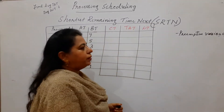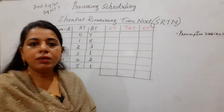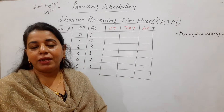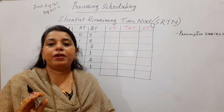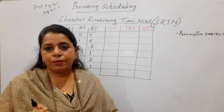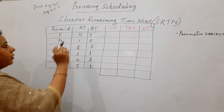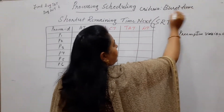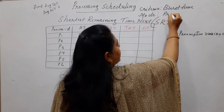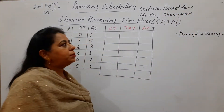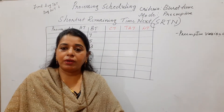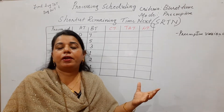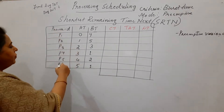In the previous session, you learned Shortest Job First (SJF), which was non-preemptive in nature. This is the first time you are going to learn the preemptive version of any scheduling algorithm. For any algorithm, first write down on what criteria you are scheduling. The criteria used here is the burst time, and the mode of operation is preemptive.